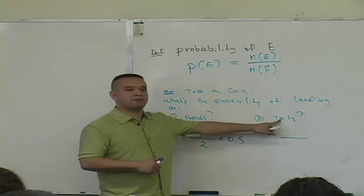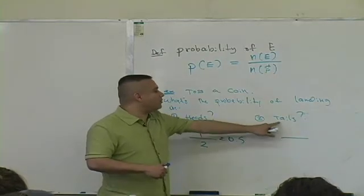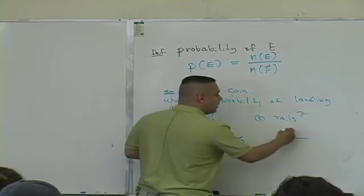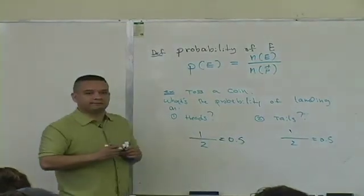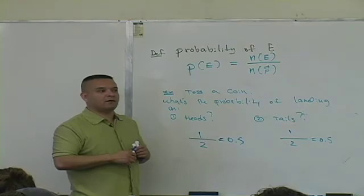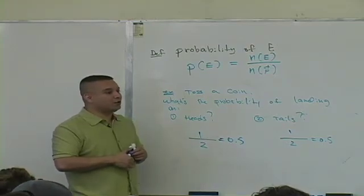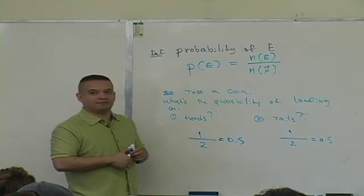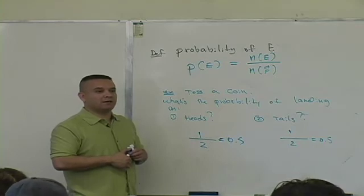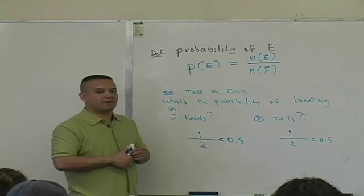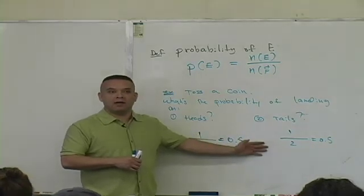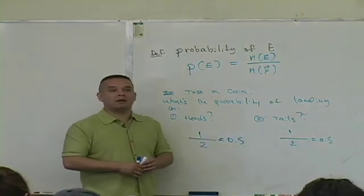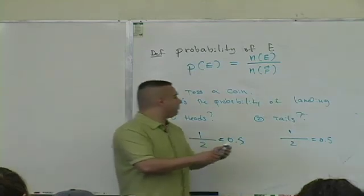What's the probability it lands on tails? Use the definition. How many outcomes are associated with tails? One. Then how many outcomes are in the sample space? Two. There you go — also one half. Is that easy or hard? Yeah, we have to do more examples. But what I'm showing you is that this definition is really that easy. It's a matter of you practicing it, thinking of things in that way, and consistently doing some problems.